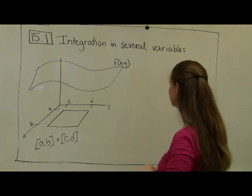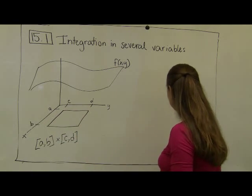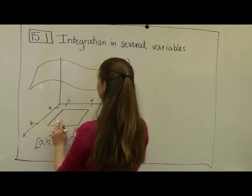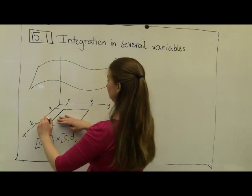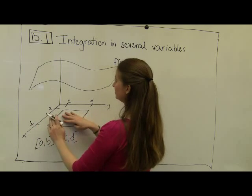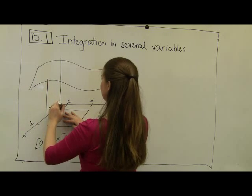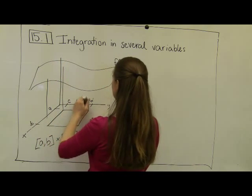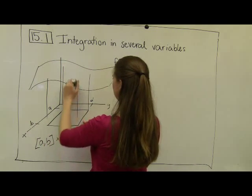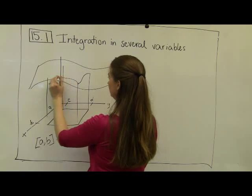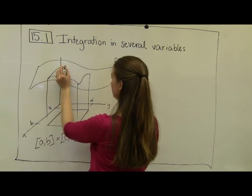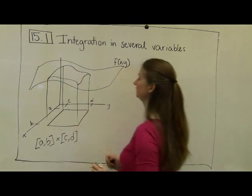And again, for our double integration, we're going to be thinking about finding the volume of this region that has this rectangular base and a height that is given by the curvy top of this function. So this is like some curvy top of the function. It follows the functional values.